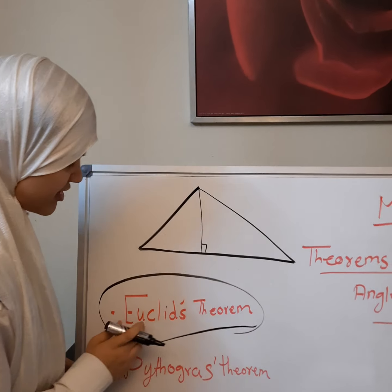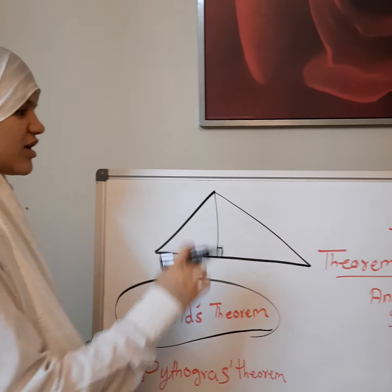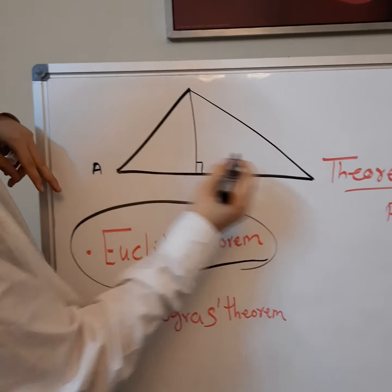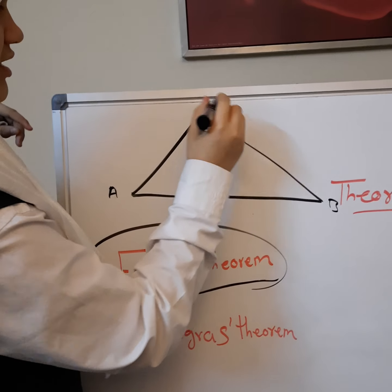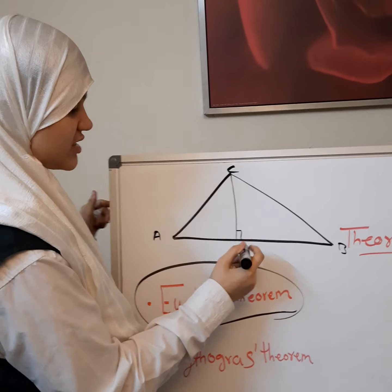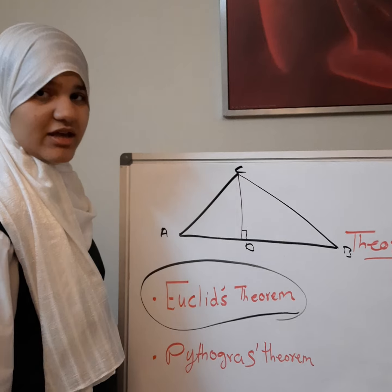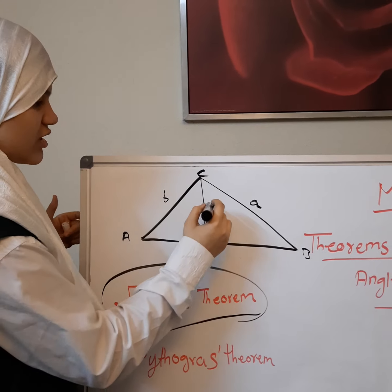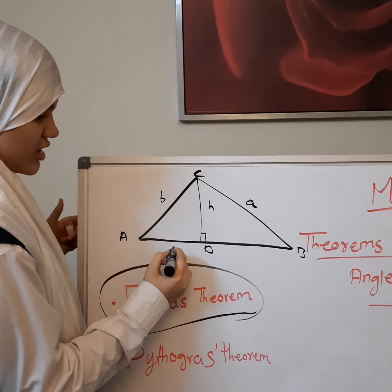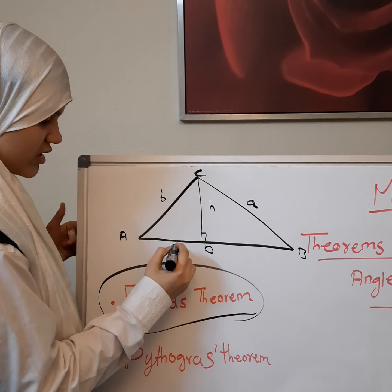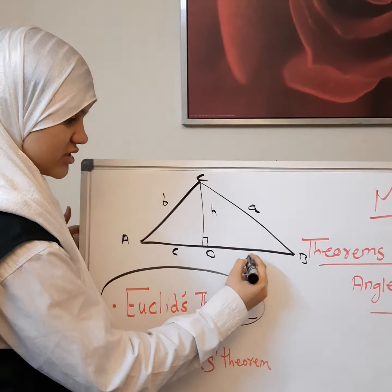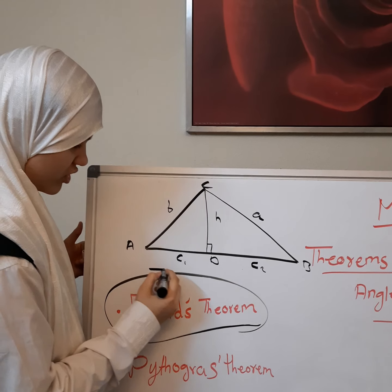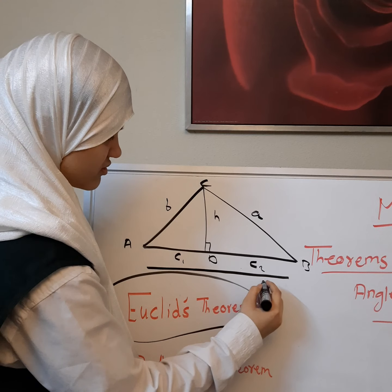First we'll work on the equality theorem. We label the vertices A, B, C (capitals) and here D. Then the sides as lowercase: a, b, h for the height, and the two segments of the hypotenuse as c1 and c2. Together c1 and c2 make up the full hypotenuse c.